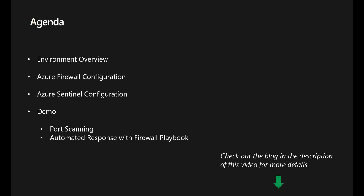Here are the topics we'll be covering in this demonstration. First, we will understand how the demo environment is set up. Then we'll look at how Azure Firewall and Azure Sentinel in the demo environment are configured. And finally, we'll run a port scan from one of the virtual machines in the environment to another VM through Azure Firewall. We'll also see how the automated response works with the Azure Firewall playbook.